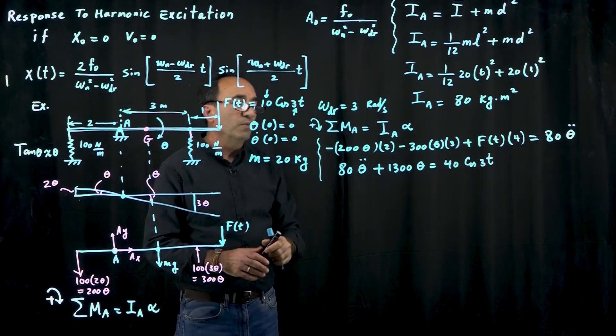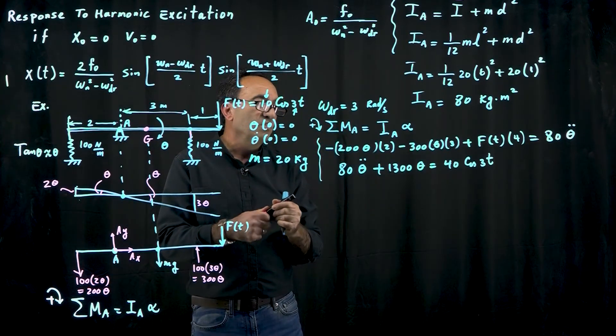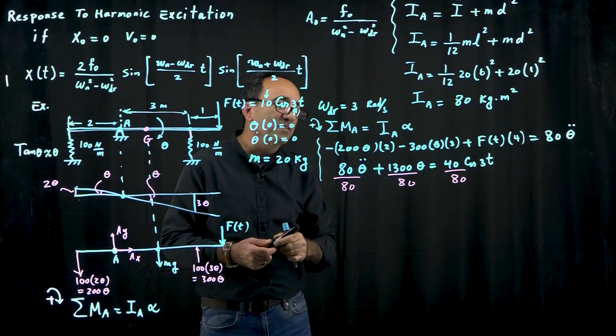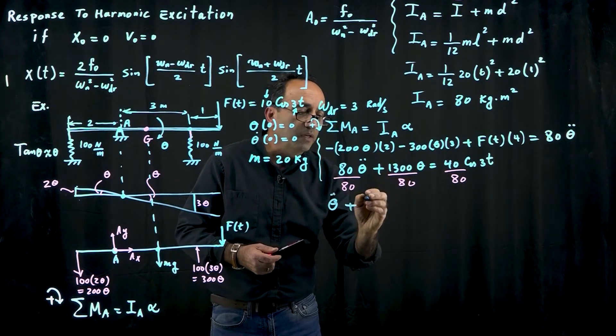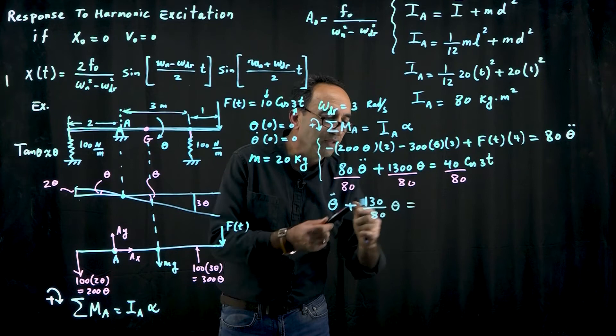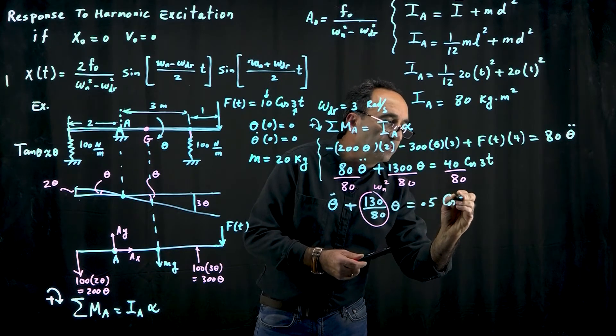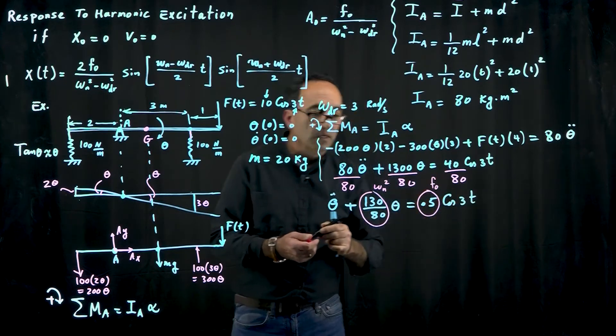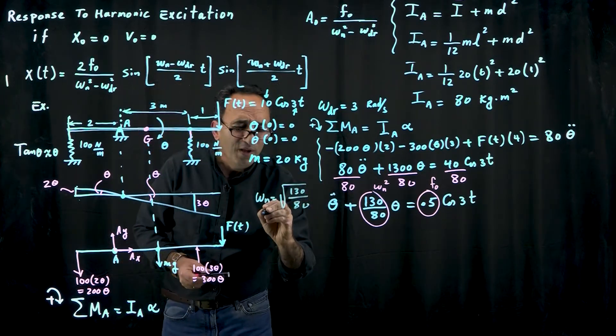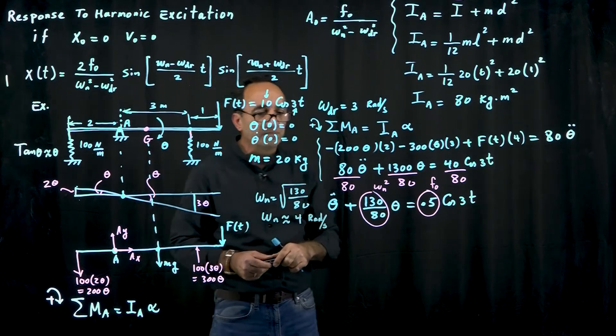Now we are ready to normalize this. Our differential equation is going to be in terms of angle theta. Normalization is done by dividing by the leading coefficient of the mass. We get theta double dot plus this is our omega_n squared now, which is 1300 or 130 over 80 theta. That's your omega_n squared. Omega_n is the square root of that. Our normalized amplitude now is 0.5, this is f0 that I'm going to use. Let's find our omega_n. Omega_n is the square root of 130 over 80, which comes out to be a little bit more than 4. For our practical purposes, say that it's 4 radians per second.